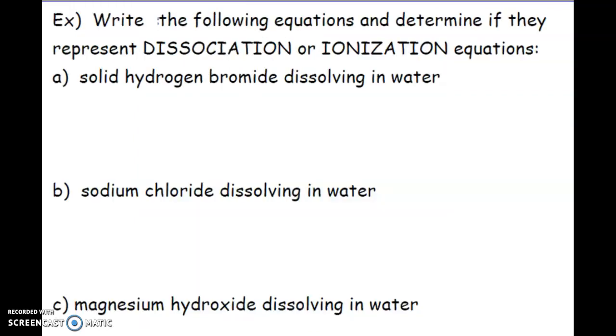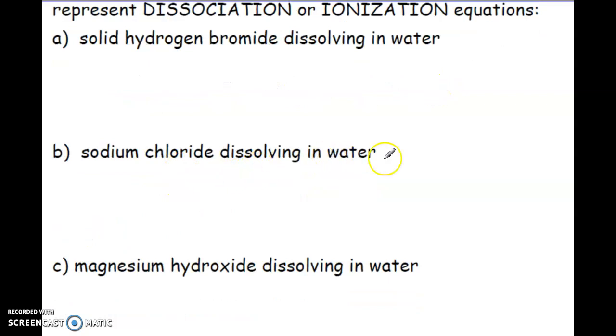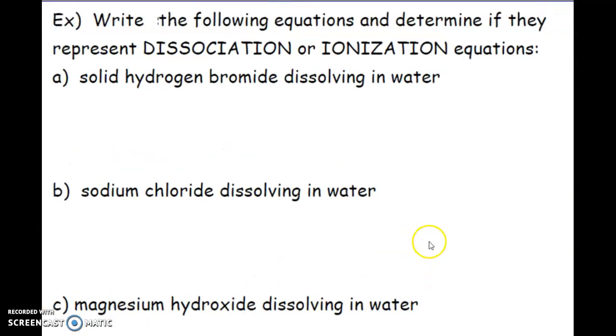What I'm going to have you do here is write the equation to represent what's happening. We have solid hydrogen bromide dissolving in water, sodium chloride dissolving in water, and magnesium hydroxide dissolving in water. Just a reminder, at room temperature, ionic compounds are in their solid form. Pause the video and give this a try. Remember, you are going to include your states. If you have ions, you need to put the charge. And after you're done, you're then going to tell me, is this a dissociation equation or is it an ionization equation?